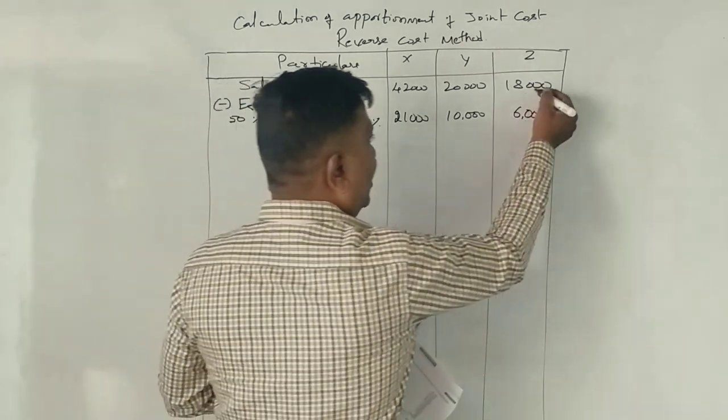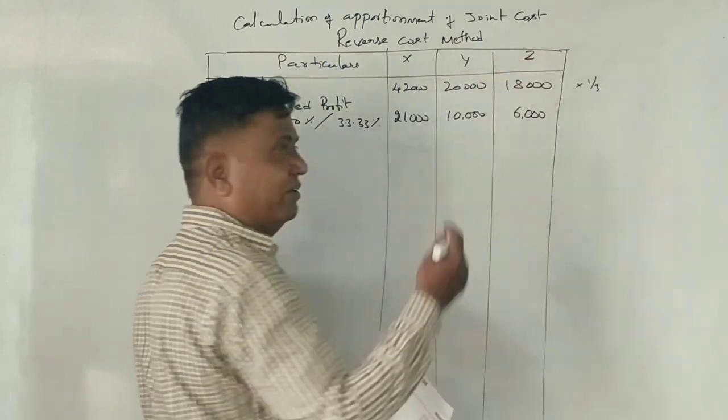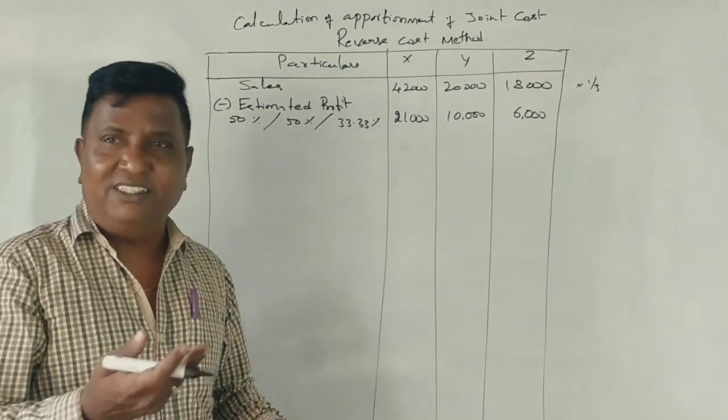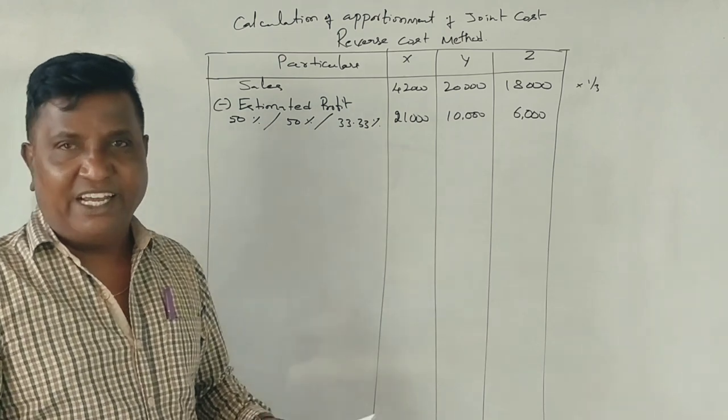What is the estimated profit is 50%, 50% and 33.33%. 50% of this is 21,000, and this is 10,000, and this is 6,000. The answer is 33.33% is 6,000. 18,000 into 1 by 3. 33 by 100 is 6,000. Correct.